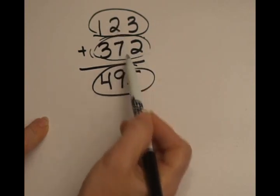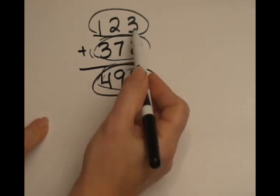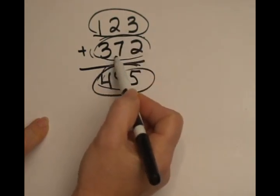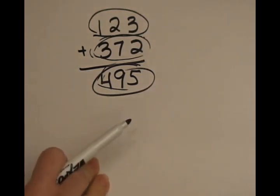So those added together are going to give me less than 500, because this is like 1 and a quarter almost, but not quite, and this is a little less than 3 and 3 quarters. So I know my result is going to be slightly less than 500. Let me show you another one.